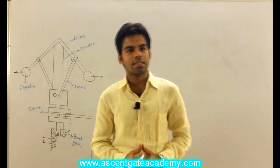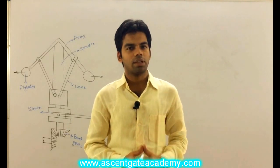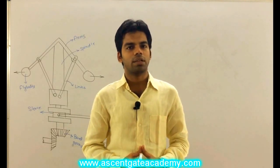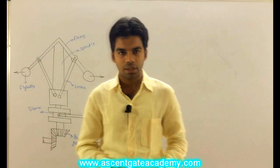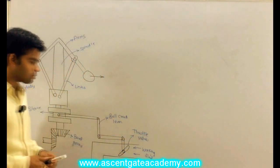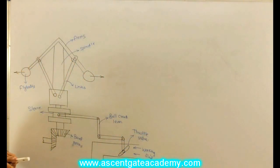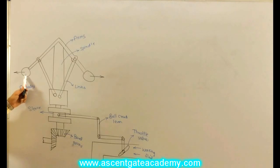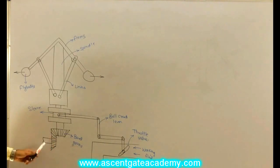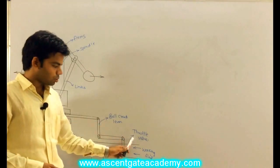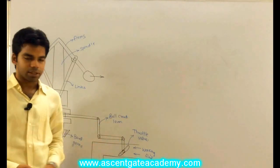Let us discuss the working of the centrifugal governor. This is the simple type of centrifugal governor — you can call it the VOD governor, which was first used. These are the different parts: the fly balls, the arms, the spindle, links, sleeve, the bevel gears, bell crank lever, throttle valve, and working fluid.